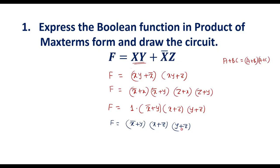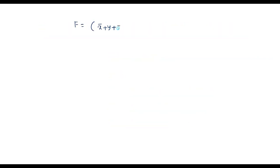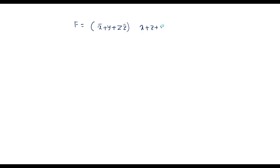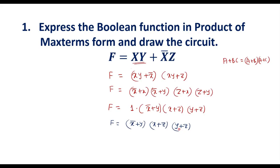This is in POS form — product of sum form — but not in standard POS or product of maxterm form. In maxterm form, each sum term must consist of all the variables. In (x̄ + y), the z variable is missing. In (y + z), the x variable is missing. We need to add those missing variables using complementary pairs, since z + z̄ = 0 and y + ȳ = 0.